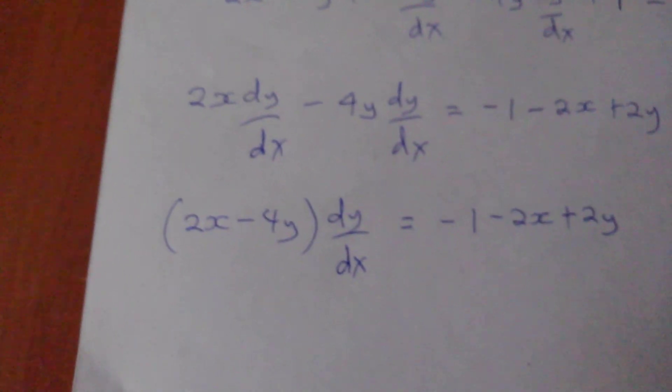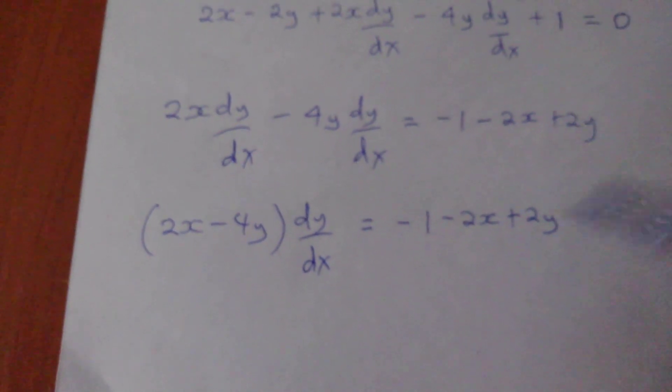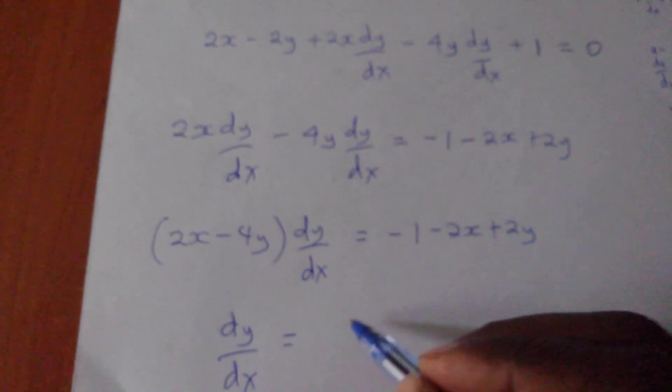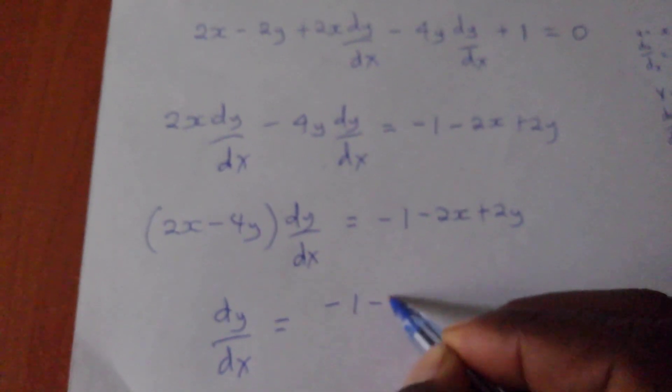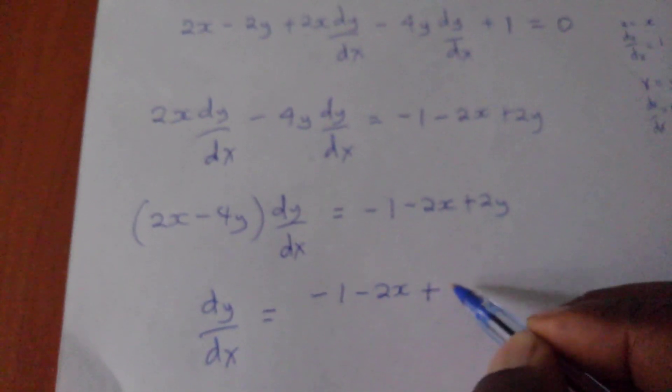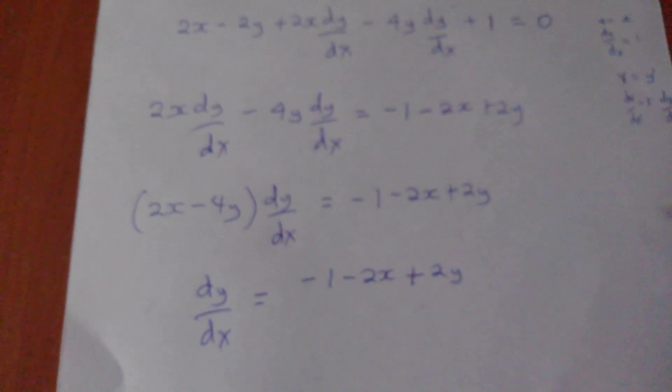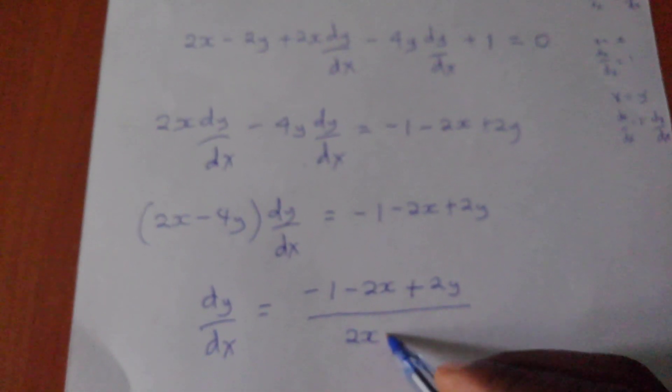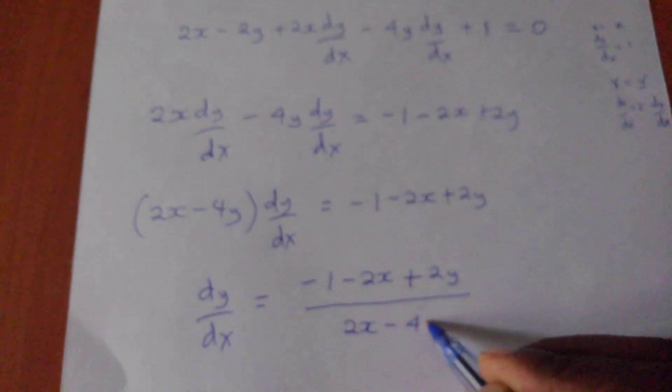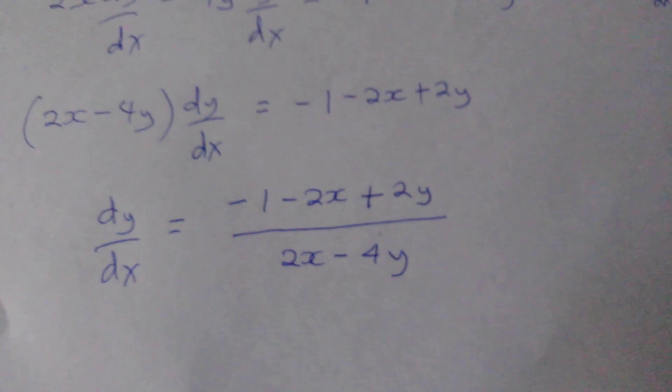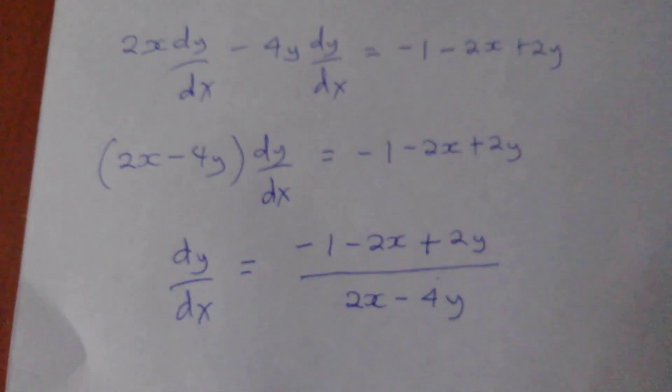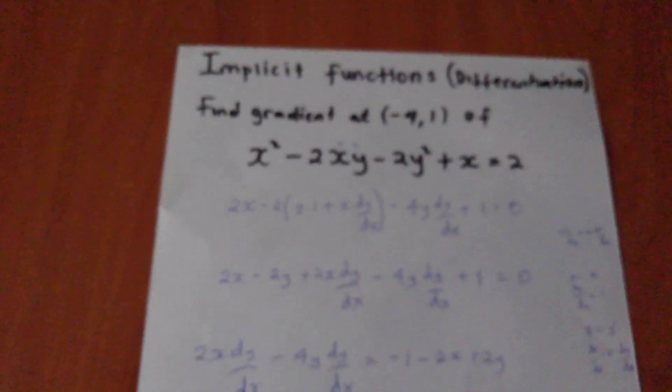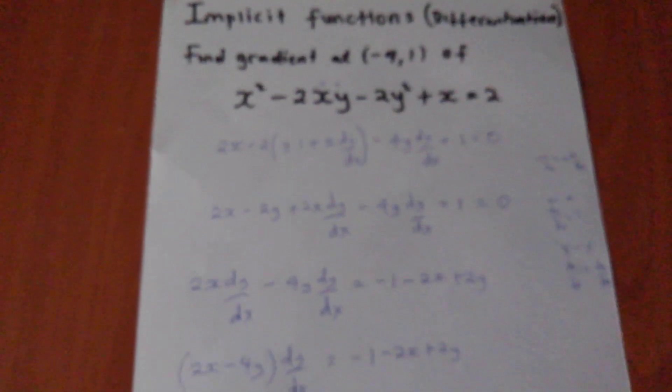So we are about to finish this number. So in here, I have to remain with dy dx, which will equal to negative 1 minus 2x plus 2y all over 2x minus 4y. I hope you are getting it clearly now. From our first step up to where we are now.